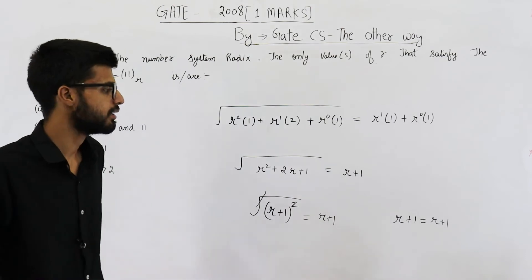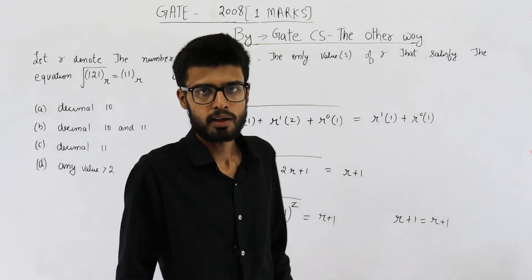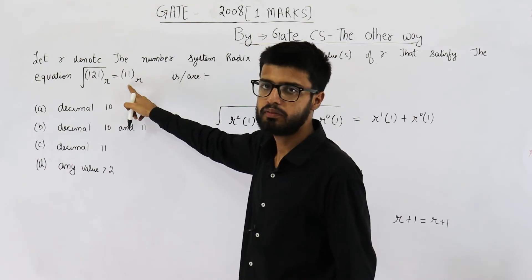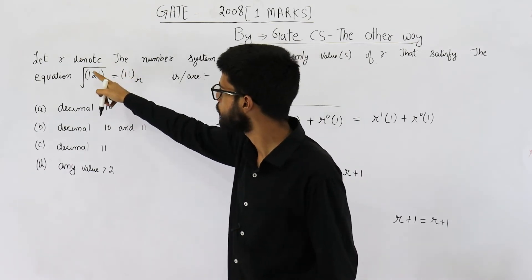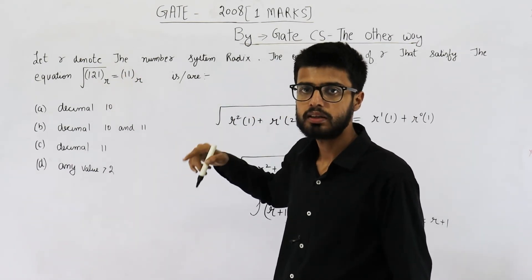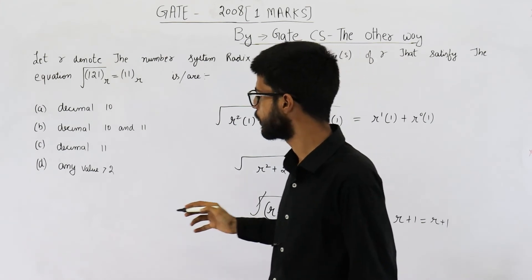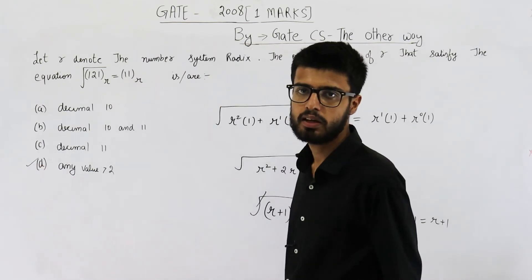This will always be true because both RHS and LHS are same. That means for each and every value of r this equation will be valid, but the value must be greater than 2. That means option D is the answer: any value greater than 2.